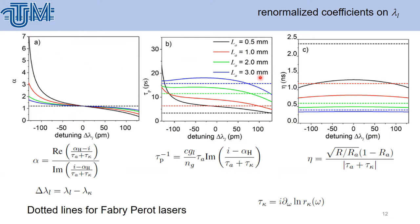Next parameter is tau p, photon lifetime, which also depends on the detuning and on the length of the active region. And eta, which is feedback strength, depends strongly on detuning. Just to mention, the dotted lines are for well-known Fabry-Perot lasers.